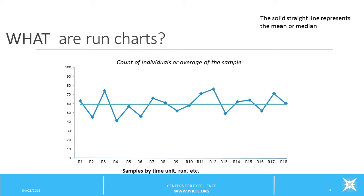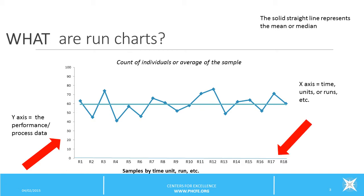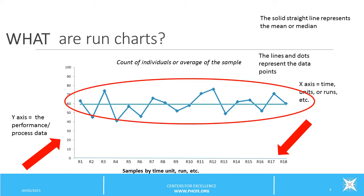Let's review the pieces and parts. The data values plotted on the left-hand side on the y-axis represent your process data — perhaps minutes of wait time or incidences of errors. On the x-axis at the bottom of the graph, you will see your sample displayed over time or by cohorts, runs, or units. The dots represent the actual data points, and the straight solid line represents the data mean or average, or sometimes the median is used.